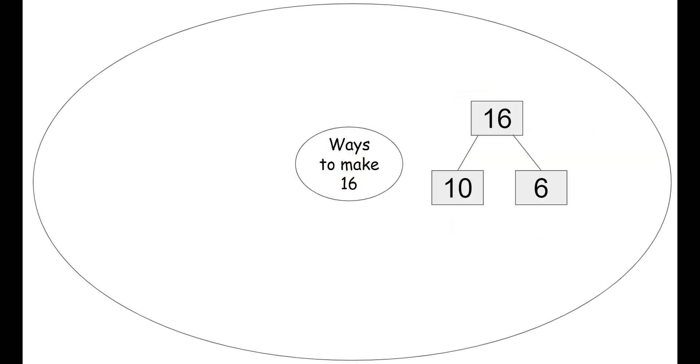Now we're going to use our circle map to brainstorm some ways to make the number 16. All right. So we can use a number bond, the number 16 on top. That's our biggest number. We can decompose the number 16 with 10 and 6 more.